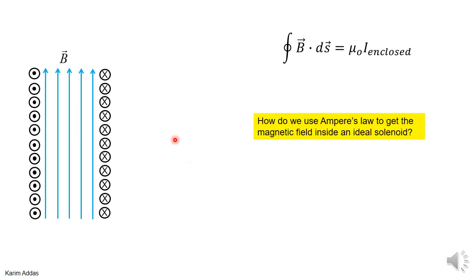Let's see how we can use Ampere's law to get the magnetic field inside an ideal solenoid. We need to use integration of B dot ds equals μ₀ times i enclosed. We need to create an Ampere loop and put it somewhere. What kind of shape Ampere loop would you take and where would you put it?